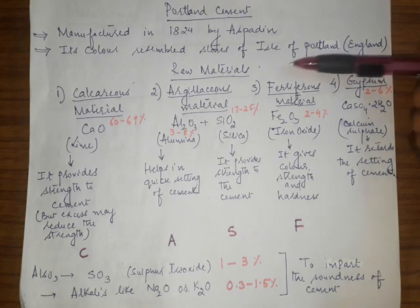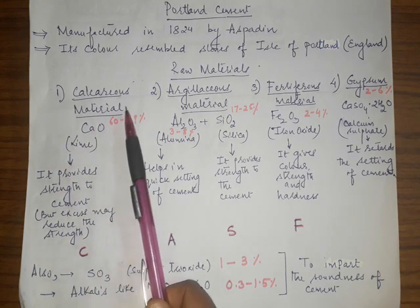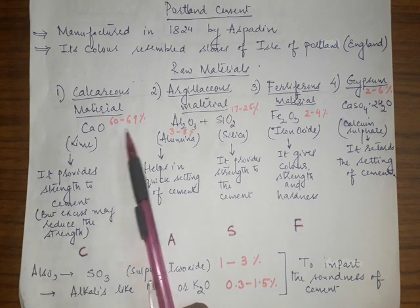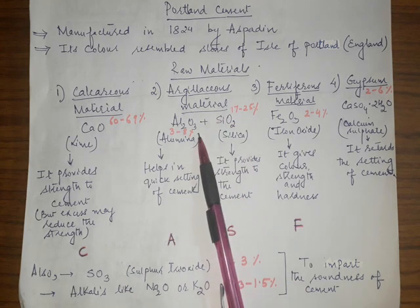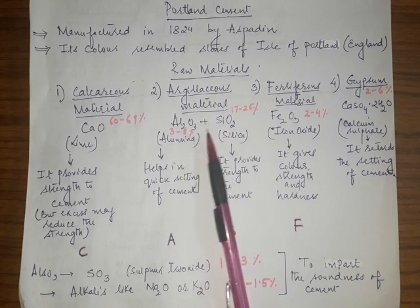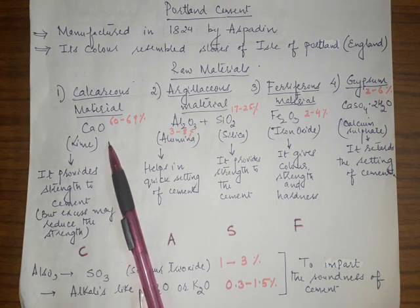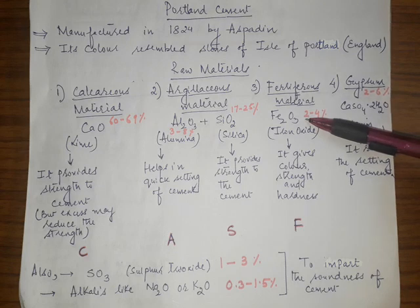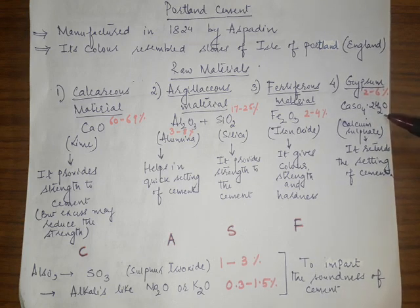The raw materials required for Portland cement are: calcareous material — lime — at about 70%; argillaceous material including alumina and silica, easily obtained from clay or sand; iron oxide (ferriferous material), used in very small amount; and gypsum (calcium sulphate dihydrate), also used in small amounts.